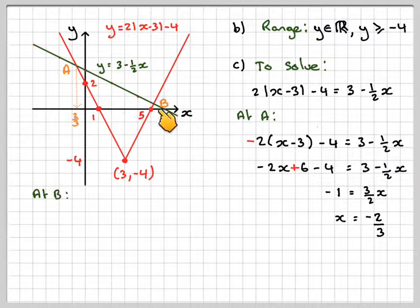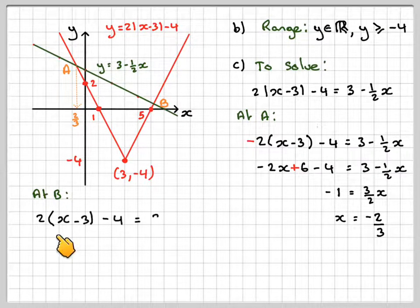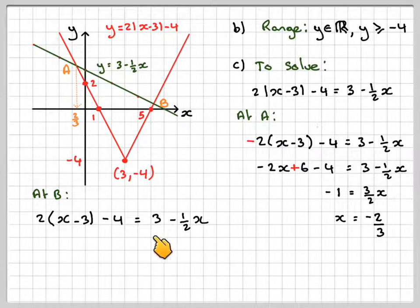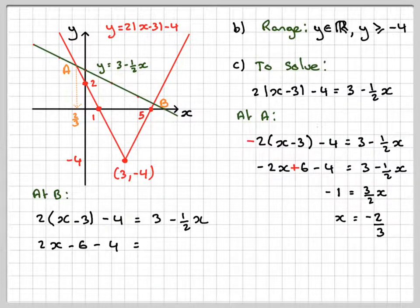To find the other place here at B, we're going to have, we treat this as positive. So, it's 2 times x minus 3 minus 4 is equal to 3 minus a half x. So, it's going to give me 2x minus 6 minus 4 is equal to 3 minus a half x.